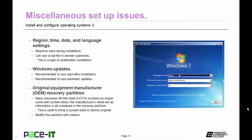The last thing to consider is the OEM recovery partition. Many consumer off-the-shelf systems no longer come with system disks — it's all contained in the recovery partition. The recovery partition is used to bring a system back to factory original, including all the default programs that you took the pains to remove in the first place. Use caution when modifying that partition.